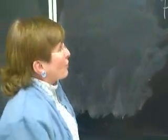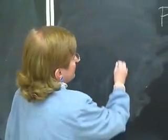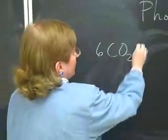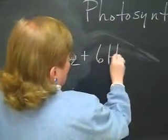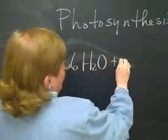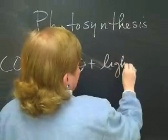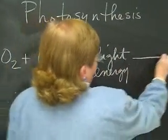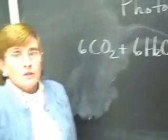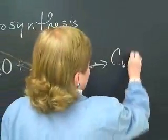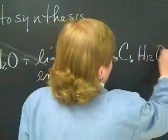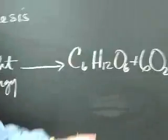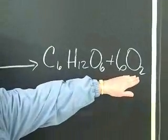If we look at the equation for what happens in this process, we have six carbon dioxide molecules, six water molecules, plus the energy, usually of sunlight, which will allow us to build a glucose molecule, C6H12O6, and give off a very important end product, oxygen.